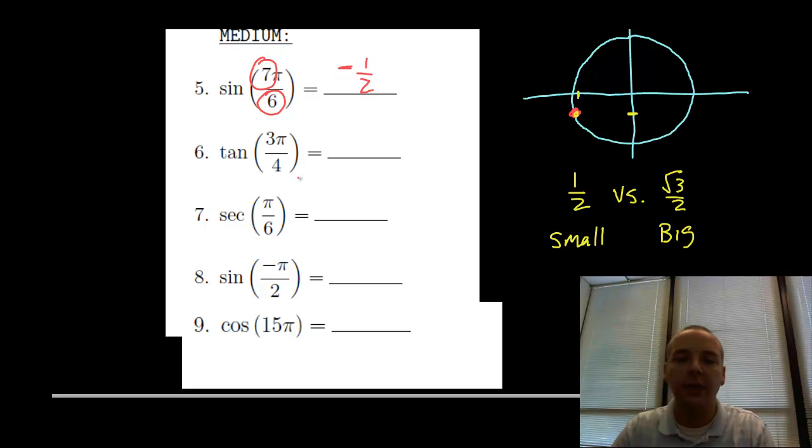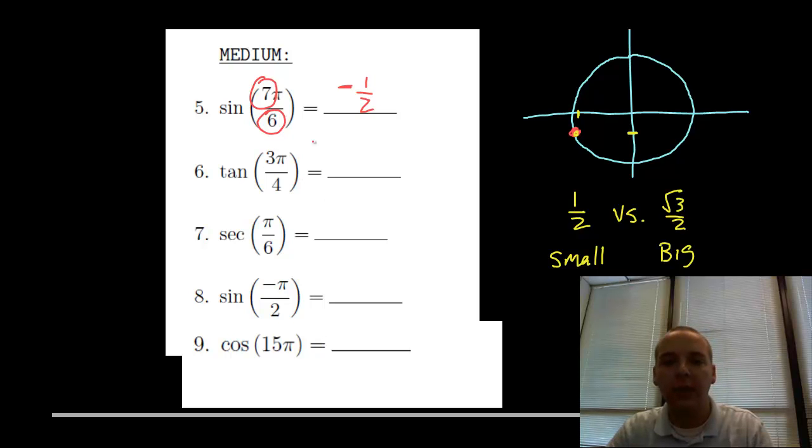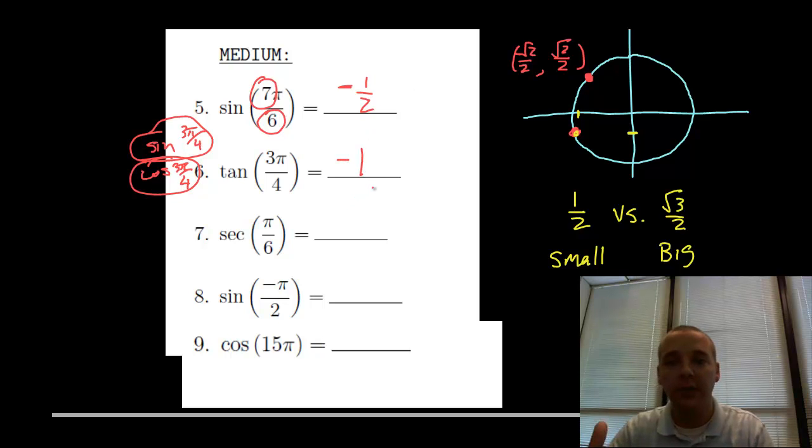Tangent of 3pi over 4. The numerator is one less than the denominator, so we're in the second quadrant. Here's 3pi over 4. Tangent is sine over cosine, so sine of 3pi over 4 over cosine of 3pi over 4. I have to find these individually and then divide them. The nice thing about 3pi over 4 is they're the same number, just different in sign: negative root 2 over 2 comma root 2 over 2. When you divide those, the ratio is negative 1 - they're the same number with opposite signs.